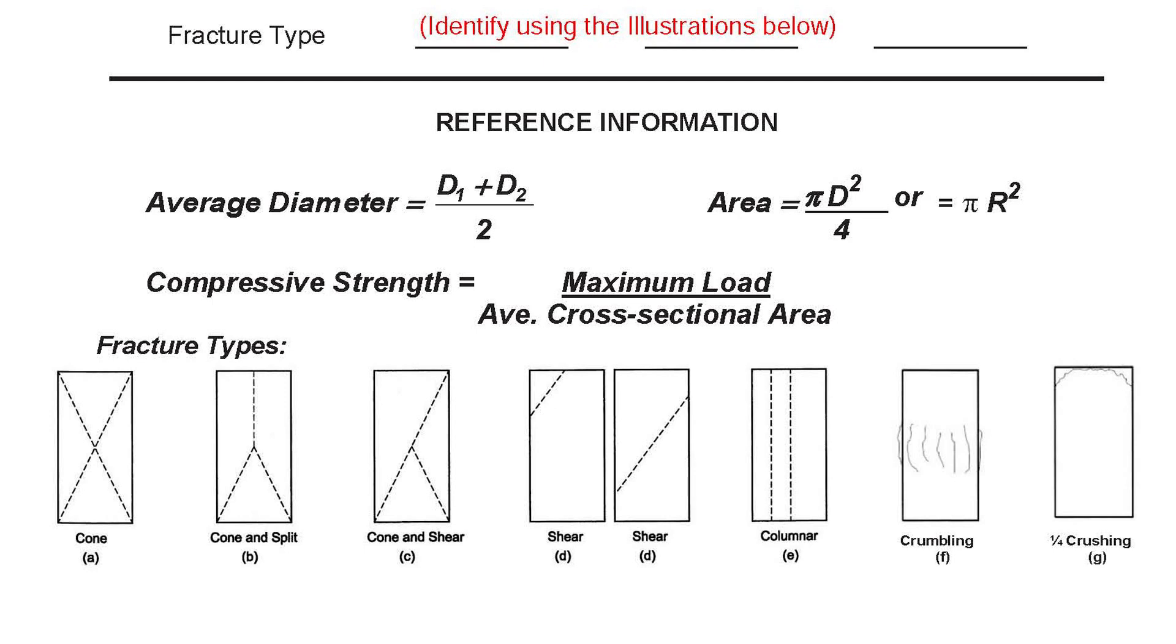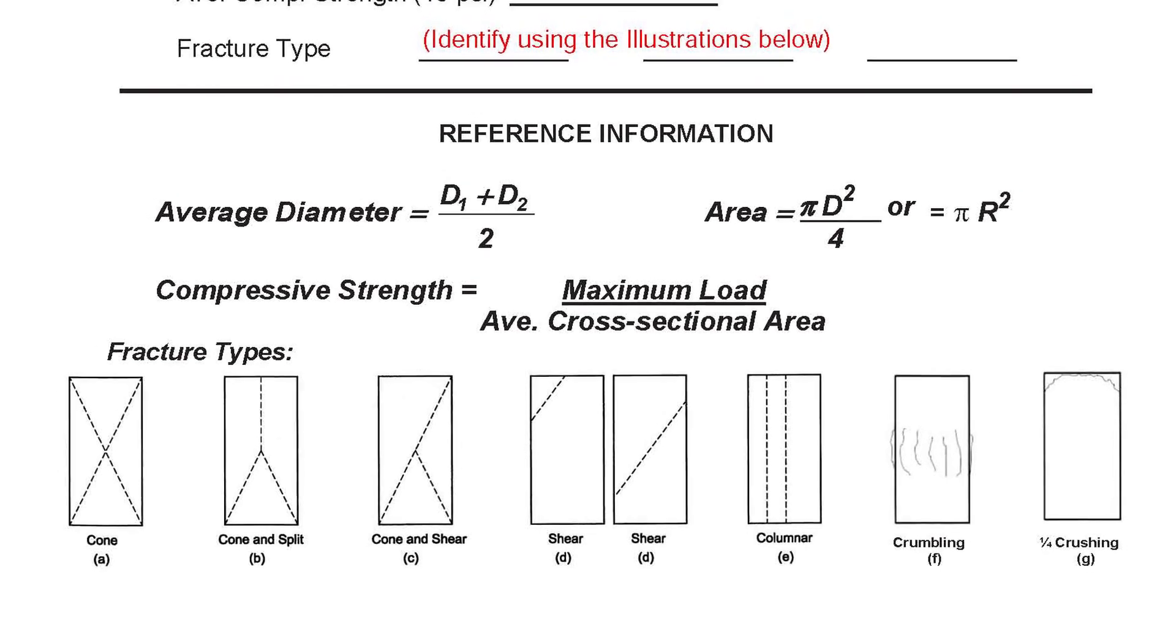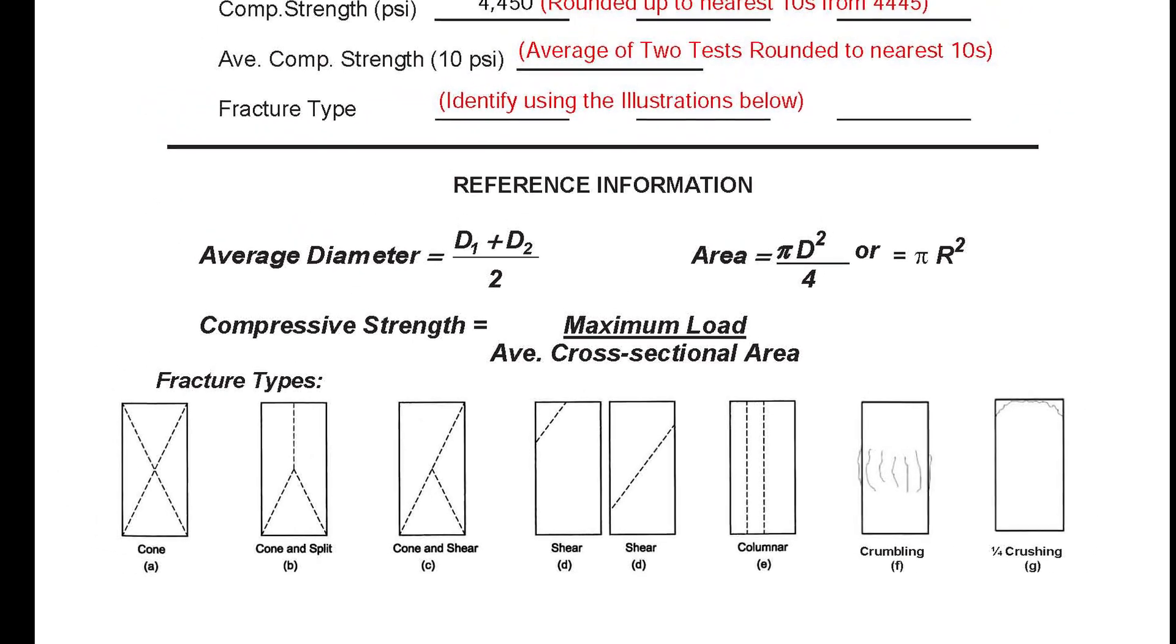These are all AASHTO designations except for the last couple that is crumbling and crushing of the upper quarter. However, we know what you're talking about when you reference those letters.